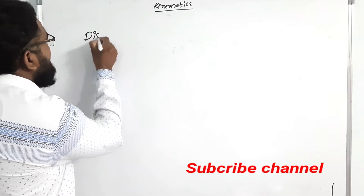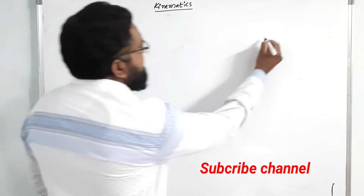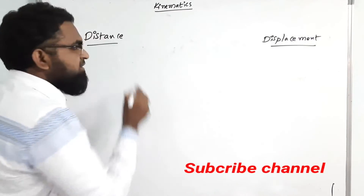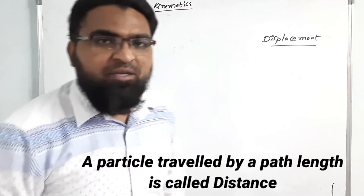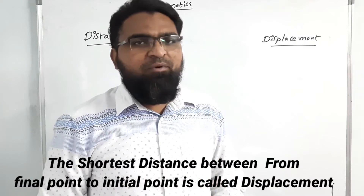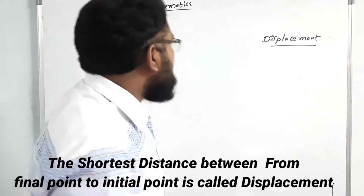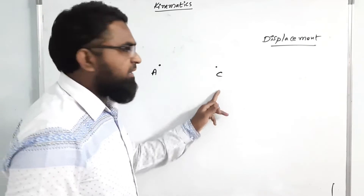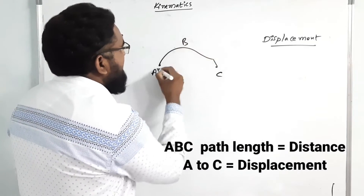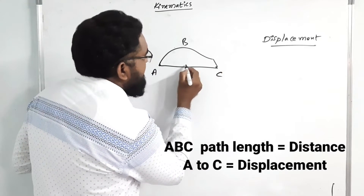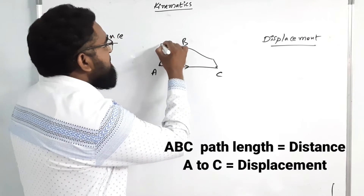Let me start now. Distance means the path length traveled by a particle is called distance. Displacement means the shortest distance from the final point to the initial point is called displacement. For example, initial point is A and final point is C. A to B and B to C is the covered distance, while A to C, the shortest distance between final point and initial point, is called displacement.